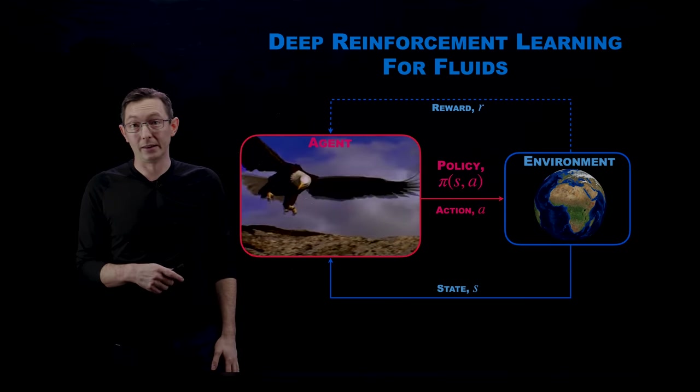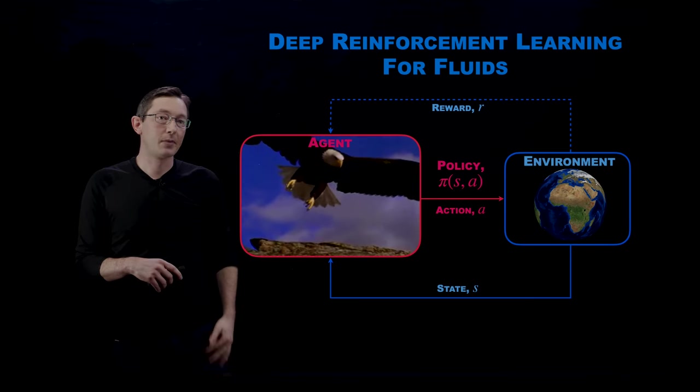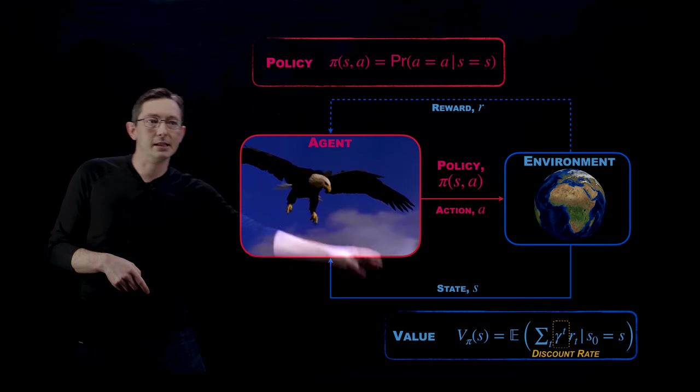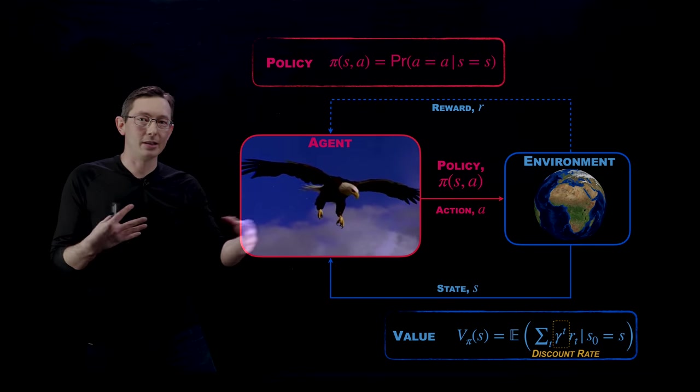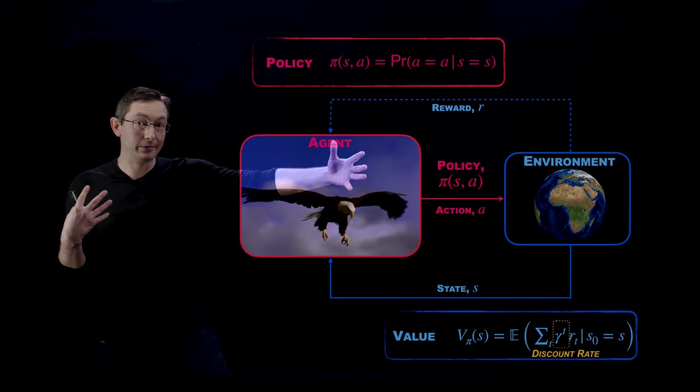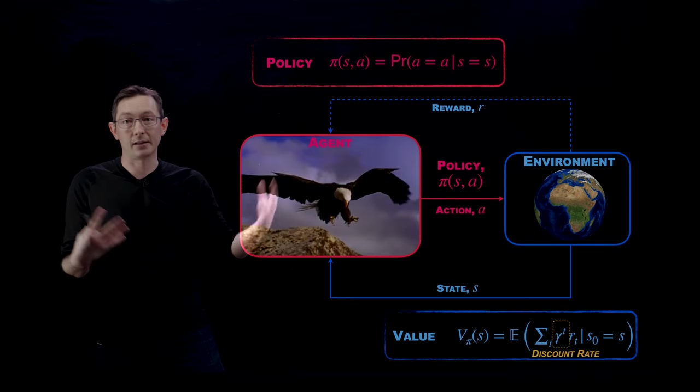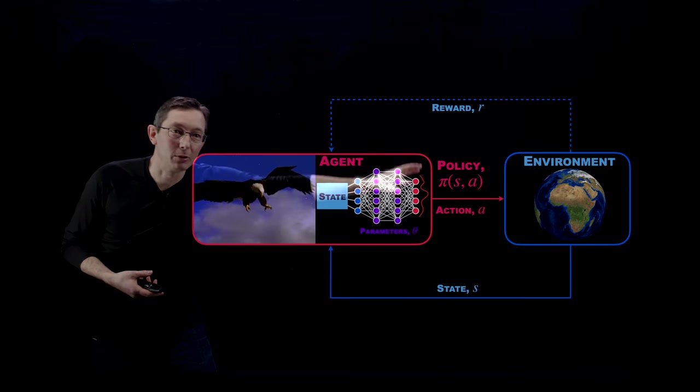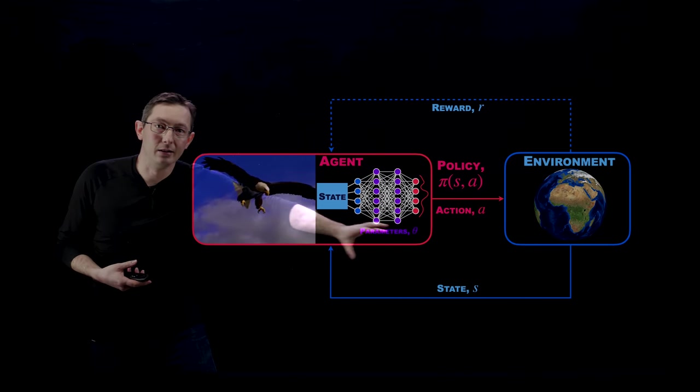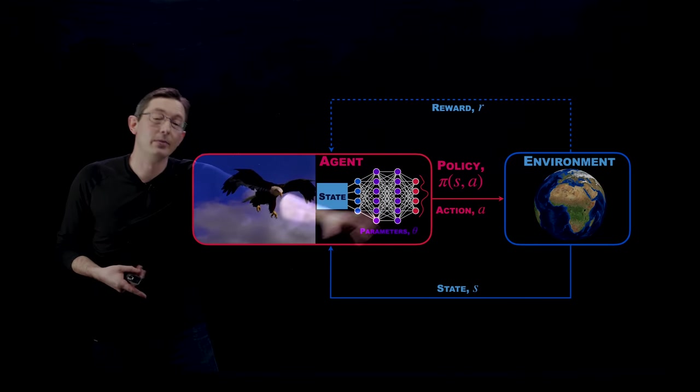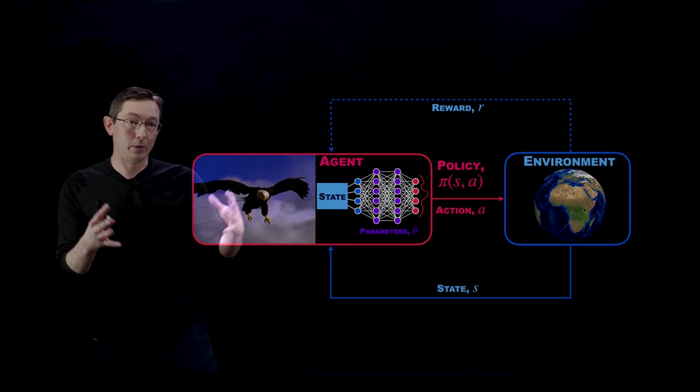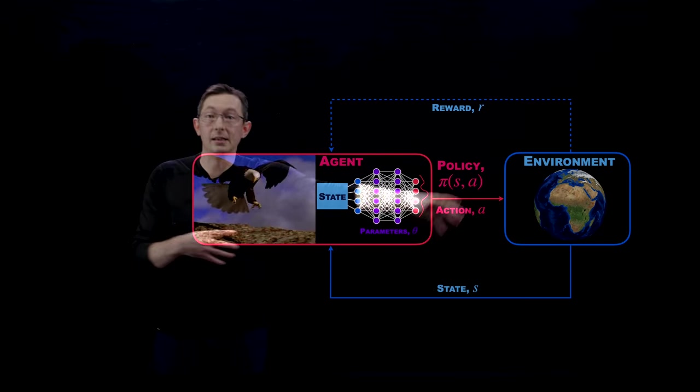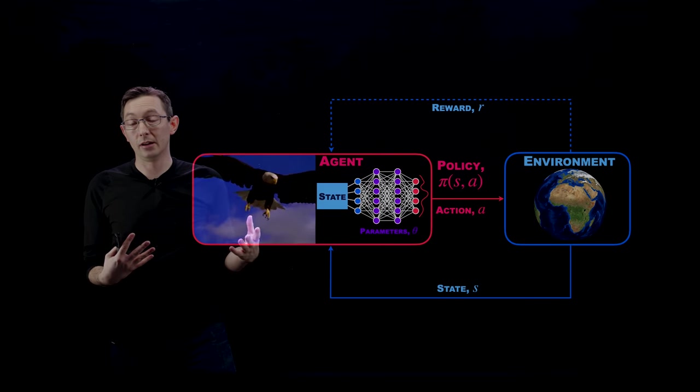We have our policy and there's some value function where the eagle estimates what its future benefit is going to be based on some control action. In deep reinforcement learning, we're essentially replacing a lot of what's going on under the hood with the eagle with this deep neural network, where we measure the state and make some informed decision about a good policy that will get us maximal rewards in the future.